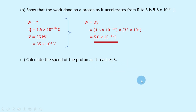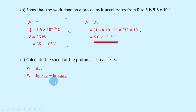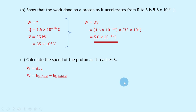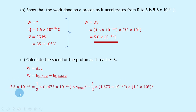For forces on charged particles, remember the important relationship between work done and changing kinetic energy: work done equals the change in kinetic energy ΔEₖ, which we can rewrite as Eₖ final minus Eₖ initial. The initial kinetic energy is not zero because the particles are not starting from rest at R — they have an initial speed of 1.2 × 10⁶ meters per second. The work done we've already calculated as 5.6 × 10⁻¹⁵ joules.